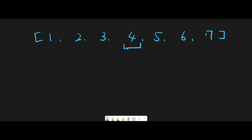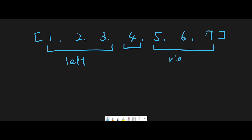Why use the middle number? Because looking at the left side of 4, all values are smaller than 4 since the input array is sorted. On the other hand, all values to the right are greater than 4 for the same reason. So if we use 4 as the root node, the left side becomes the left subtree and the right side becomes the right subtree. We create a node with 4, then go to the left side with 1, 2, 3 and create a subtree.